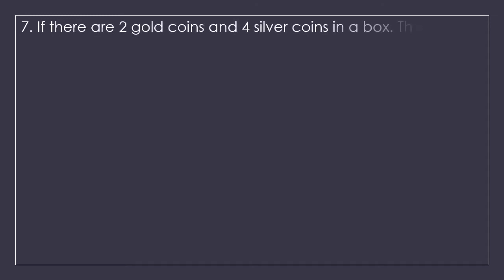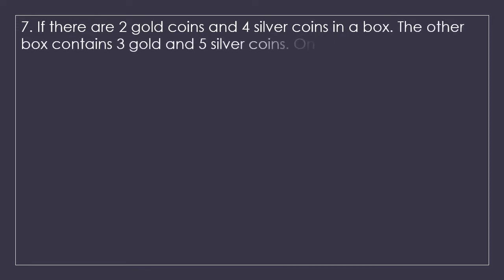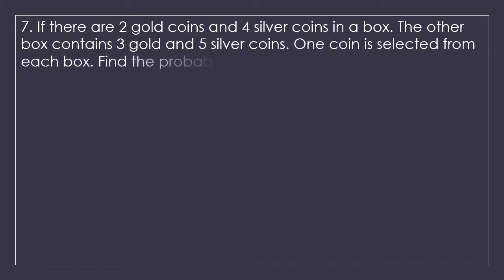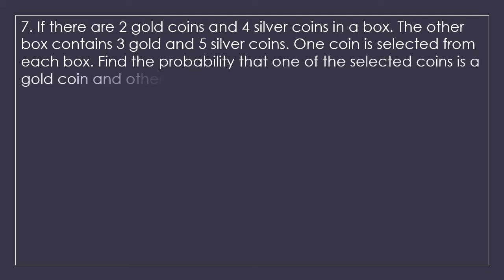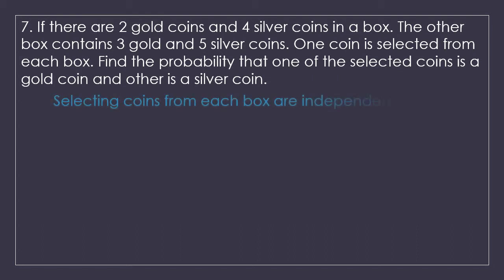Question 7: If there are 2 gold coins and 4 silver coins in one box, and the other box contains 3 gold and 5 silver coins, one coin is selected from each box. Find the probability that one of the selected coins is gold and the other is silver. Selecting a coin from one box does not affect the selection from the second box because both boxes are separate — that means selecting coins from each box are independent events.